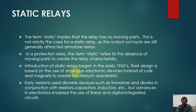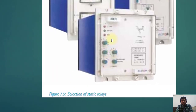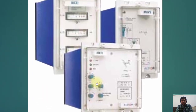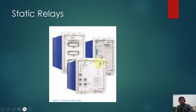Early versions used discrete devices such as transistors and diodes in conjunction with resistors, capacitors, and inductors, but advances in electronics enabled the use of linear and digital integrated circuits. This is an example of static relays — they have DIP switches you can see here and selectors. This is a very simple example and you can still find these relays in some substations.